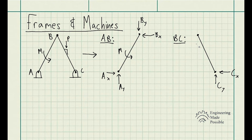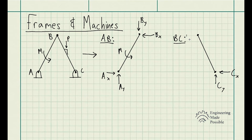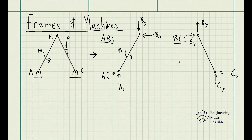One thing to keep in mind is the perspective. For every action there's an equal and opposite reaction. Since we're talking about the same pin B, we already have BY and BX. But when considering pin B acting upon member BC, we have an equal and opposite force — so BX is going toward the right instead of the left as previously drawn, and BY for member BC goes upward rather than downward as it was for member AB.